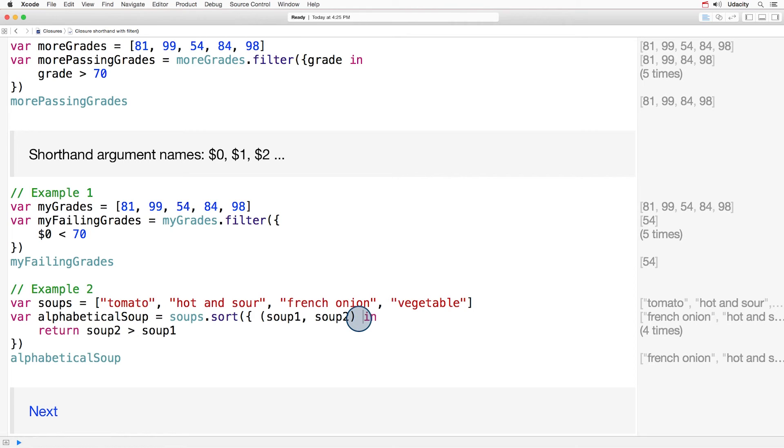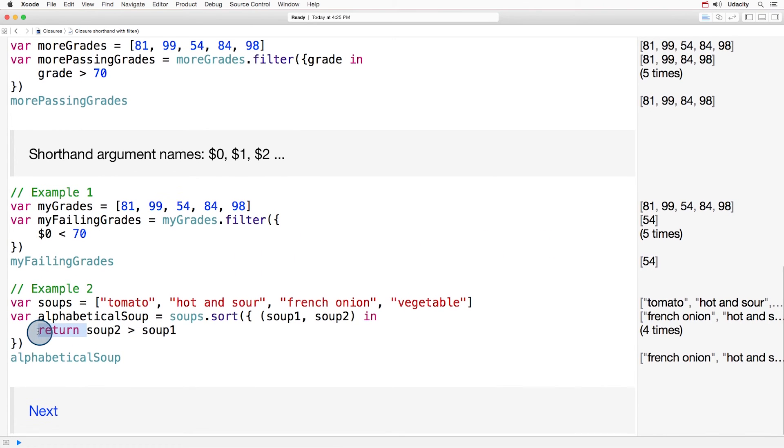Along with the arrow, of course. This is a single expression closure. So it can be inferred that it returns the result of the single expression. So we can leave out return.